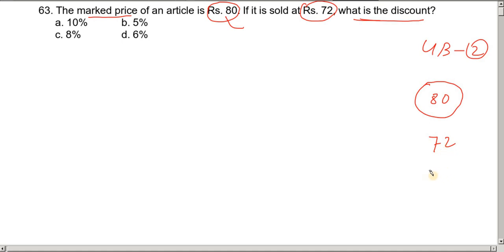The article with mark price Rs. 80 is sold at Rs. 72. The difference of Rs. 8 is the discount. To find the discount percentage, if mark price is Rs. 80, we take it as 100 percent.